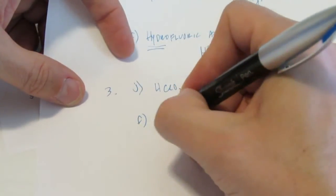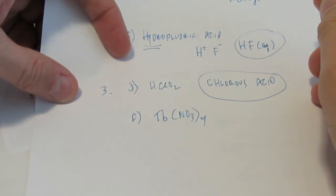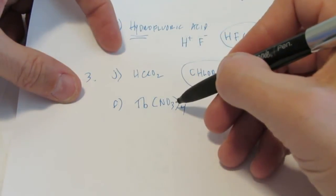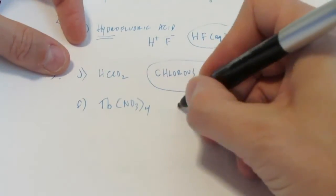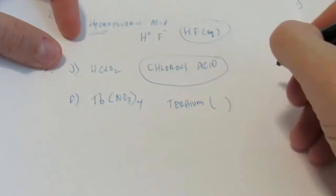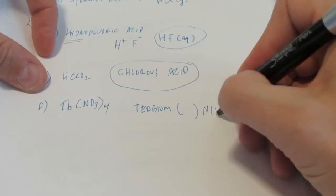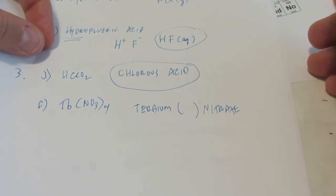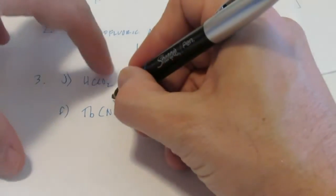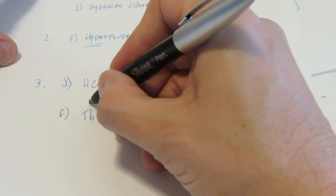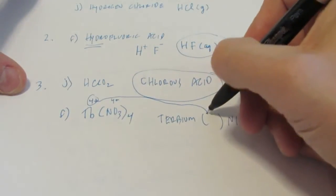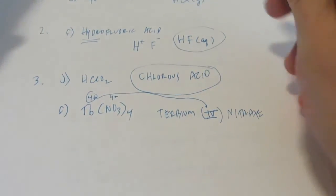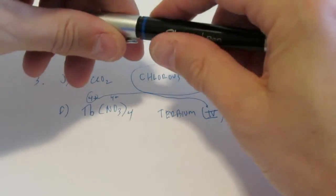Letter F: Tb(NO₃)₄. Now, that's a metal and a polyatomic ion, so we're going to use our ionic naming system. Tb is terbium — it needs Roman numerals. NO₃ is called nitrate, NO₃⁻¹. There are 4 of them, so I have 4 negatives. That makes terbium 4 positive. So the Roman numeral 4 goes there: terbium(IV) nitrate. You have lots more to do — I believe there are 39 or 40 of these on assignment 22, and I've probably done about a dozen for you.